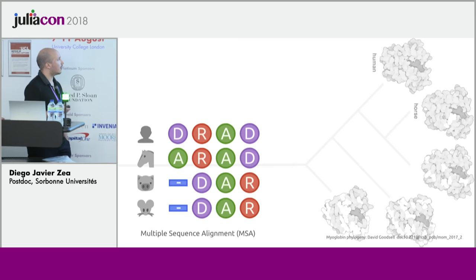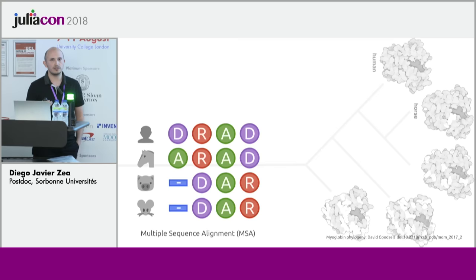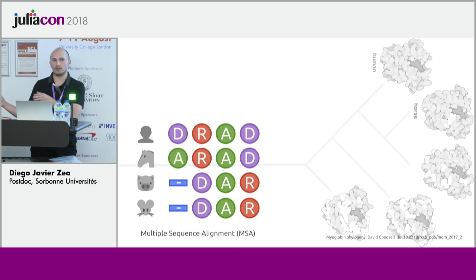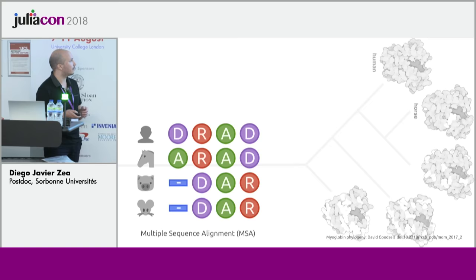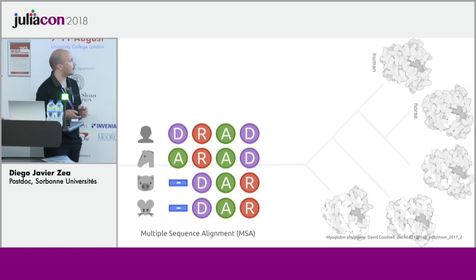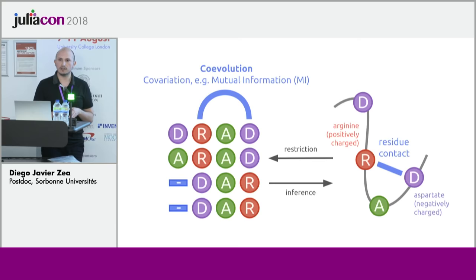I am particularly interested in protein evolution. To study protein evolution, in general, we need to have a set of related proteins. For example, if I am studying myoglobin from human, maybe I will want myoglobin from other species to construct a multiple sequence alignment, or MSA. I say mutual information because I'm interested in coevolution of positions in the protein.